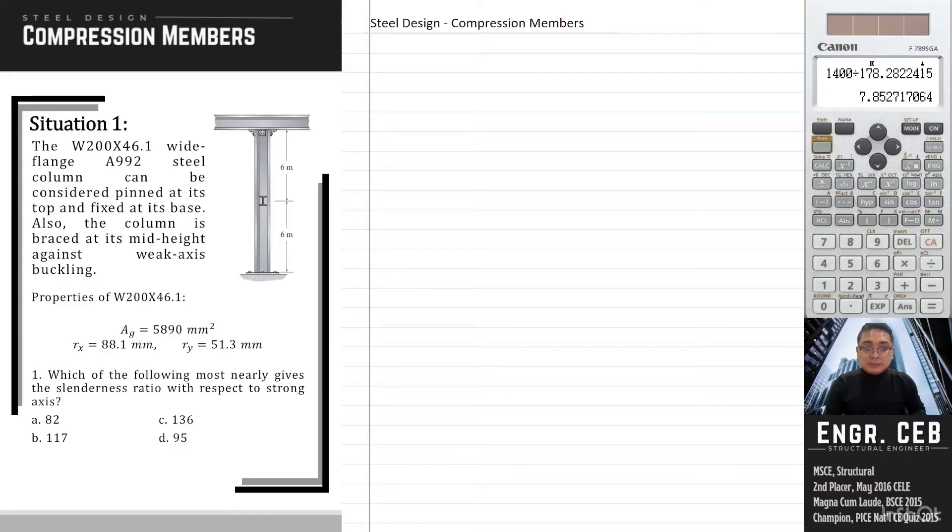For the first problem, which of the following most nearly gives the slenderness ratio with respect to strong axis? Considering buckling, we have two primary axes: buckling about strong axis and buckling about weak axis. For strong axis, that is the axis with larger moment of inertia. Since the moment of inertia is not given, we will base it on the larger radius of gyration.